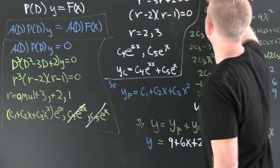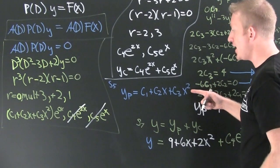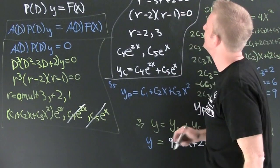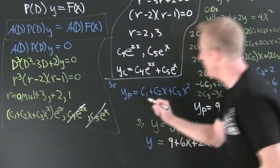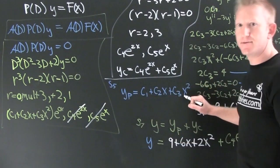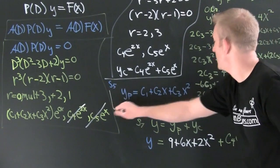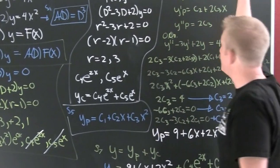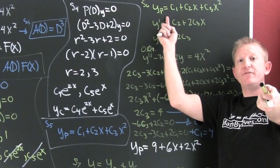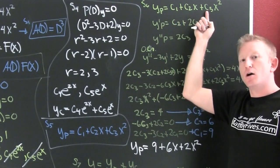Step five: our particular solution y_p is going to be the remaining solutions after eliminating the homogeneous ones. So we have y_p = c₁ + c₂x + c₃x². We dropped the e^(0·x) since it's just 1. Step five complete. Step six: take that particular solution and find the coefficients c₁, c₂, and c₃.